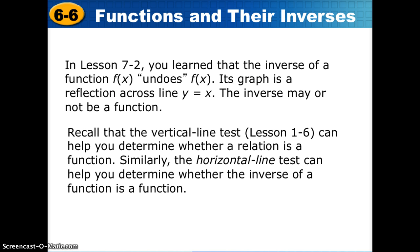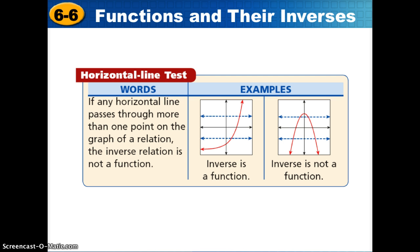To help us determine if a relation is a function, we use the vertical line test. If the curve touches the pencil in more than one place for any given x, then we know it's not a function — it's just a relation. Similarly, we're going to use something called the horizontal line test to determine if the inverse of a function is actually a function. We apply the horizontal line test on the function we're examining, as shown by the dotted horizontal lines.